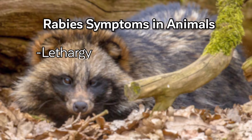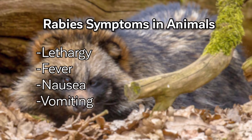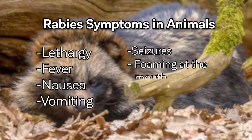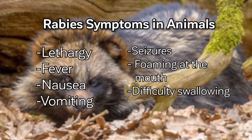The symptoms of rabies normally start out with lethargy, fever, nausea, and vomiting. In animals, this progresses to an unsteady gait. It can cause seizures, foaming at the mouth — which is related to excessive salivation and difficulty in swallowing — and also difficulty in breathing, which is very common in animals.